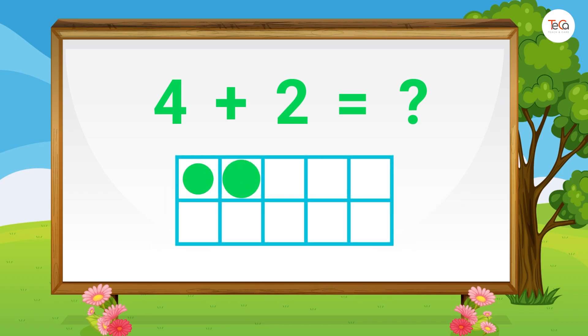Next, 4 plus 2 equals... Draw 4 dots then 2 dots. Here we have 6 dots in total. So 4 plus 2 equals 6.